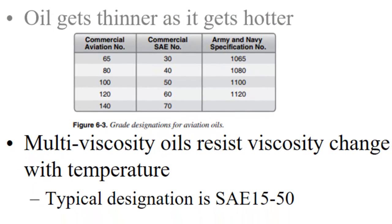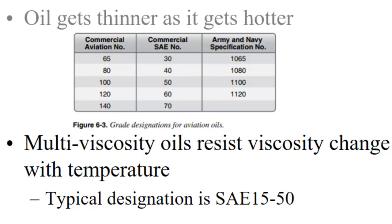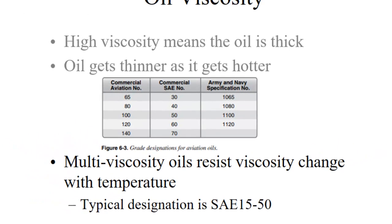Multi-viscosity oils are chemically designed to cover a wider range of temperatures. For instance, with an SAE 15W-50, during really cold temperatures this oil is as thin as 15 weight, and when it's really hot it's as thick as 50 weight, and therefore it can be used in a broader range of temperatures. When it's a multi-viscosity oil, in every instance they just use the SAE number rather than the aviation W number — so SAE 15W-50, not aviation 30-100.